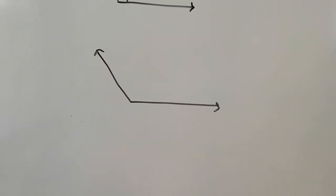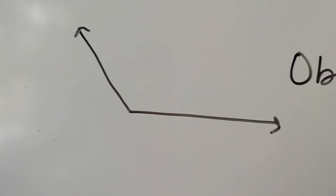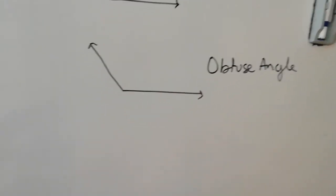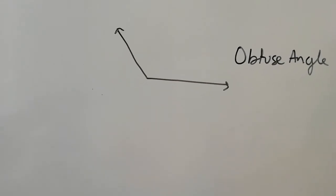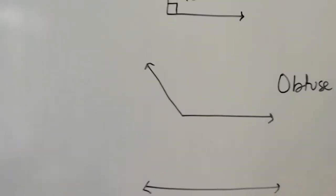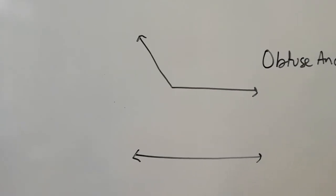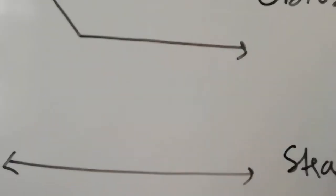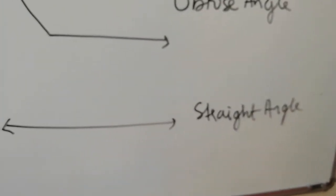What is this angle called? It is called an obtuse angle. An obtuse angle means an angle which is more than 90 degrees but less than 180 degrees. And when this line lies completely flat — when it is a full straight line — what is this angle called? It is called a straight angle.